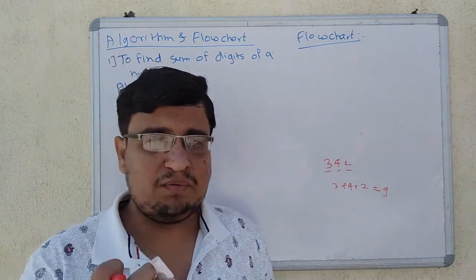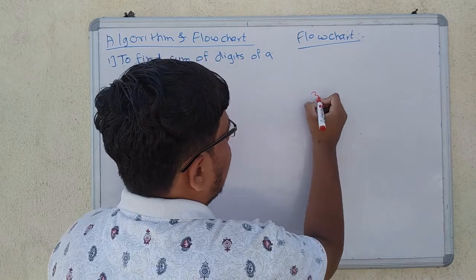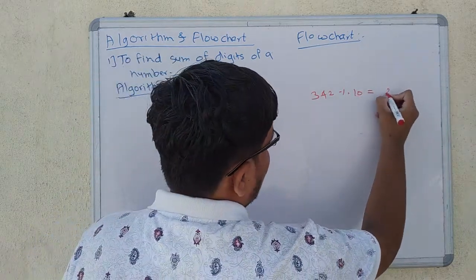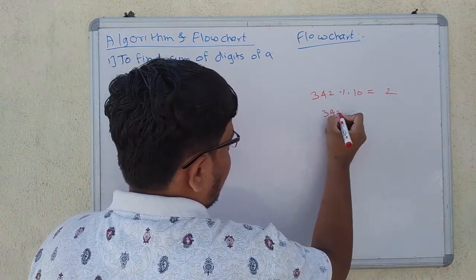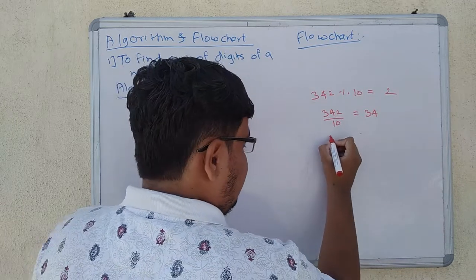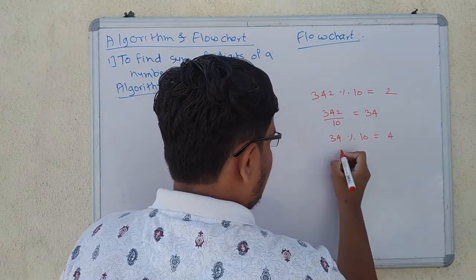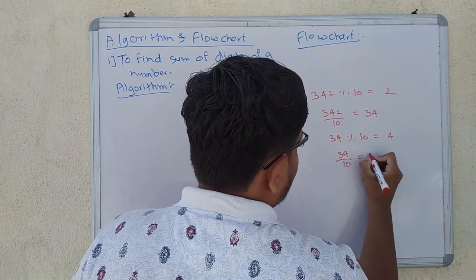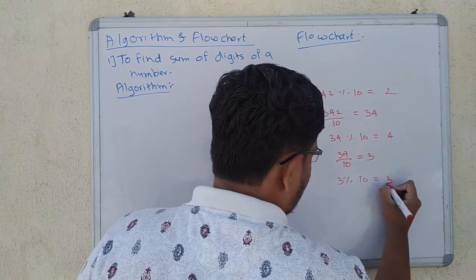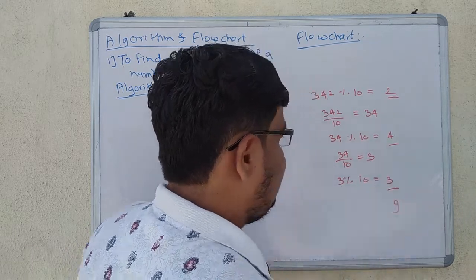So what is the logic? First, I will mod 342 by 10, which gives 2. After that, I will divide the number by 10, leaving 34. Then I will mod 34 by 10, which gives 4. After that, I will divide 34 by 10, leaving 3. Then I will mod 3 by 10, which gives 3. So this is our logic.